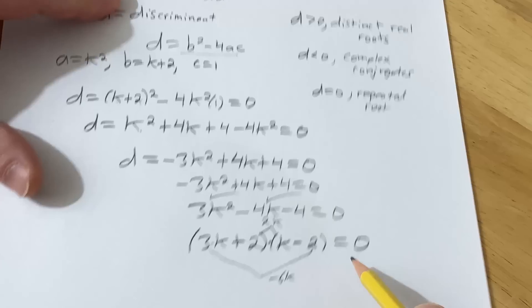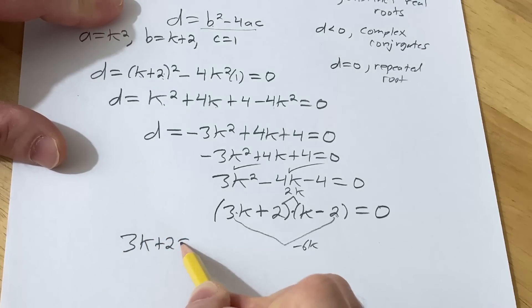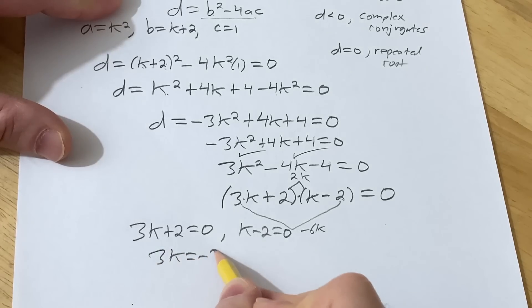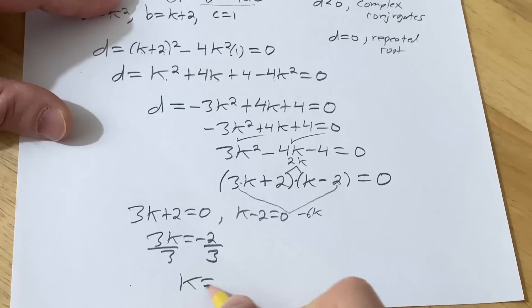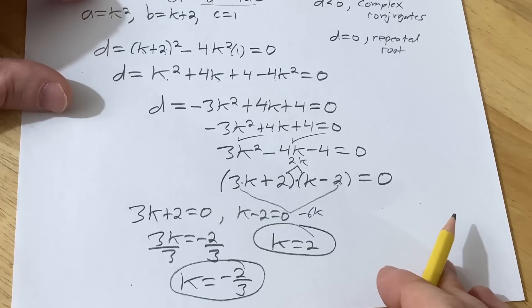We have a product equal to 0. So we set each factor equal to 0. So 3k plus 2 equals 0. Or k minus 2 is 0. Subtract 2. Divide by 3. So we get k equals negative 2 thirds. And the other one here is k equals 2. So those are our two answers for this problem.